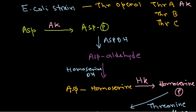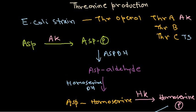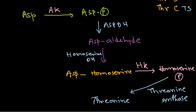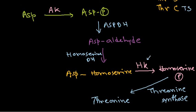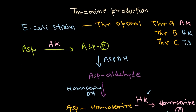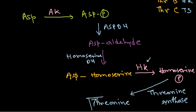The threonine C gene encodes threonine synthase, and the threonine B gene encodes homoserine kinase. Threonine A gene produces aspartokinase, threonine B synthesizes homoserine kinase, and threonine C synthesizes threonine synthase. Together, these three enzymes produce threonine, our desired product.